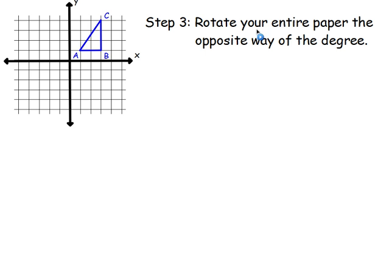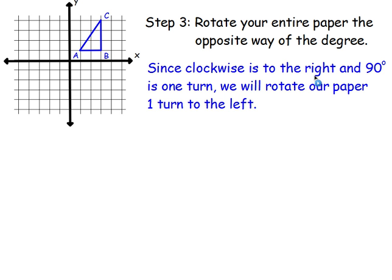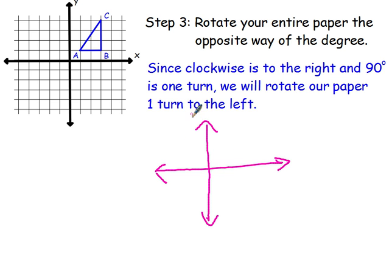Step three is to rotate our entire paper the opposite way of the degree. So if we're rotating it clockwise — which is to the right — 90 degrees, we are going to rotate our paper one turn to the left, because that's the opposite way. After you've rotated it, your shape is now going to look like this. The x-axis is now up and down, and the y-axis is left and right.